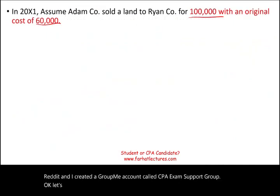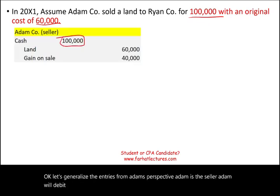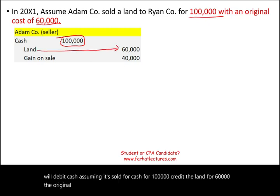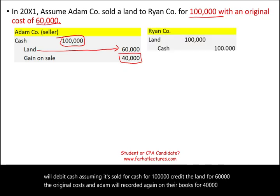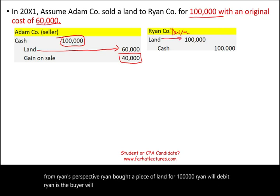Let's journalize the entries from Adam's perspective. Adam is the seller. Adam will debit cash for $100,000, credit land for $60,000 (the original cost), and record a gain on the books for $40,000. From Ryan's perspective, Ryan bought the land for $100,000. Ryan will debit land for $100,000 and credit cash for $100,000.